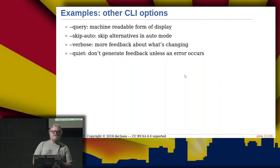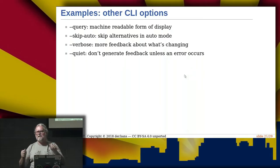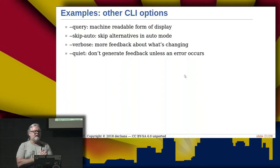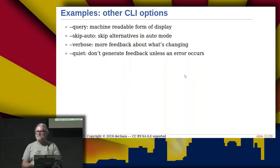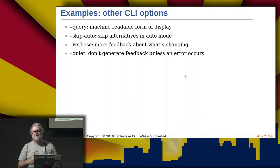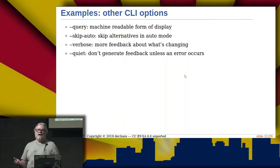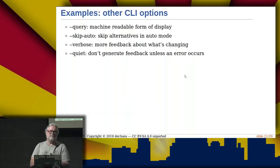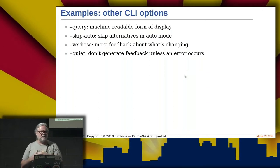Some other command-line options: --query gives you a machine-readable form of display — the same information as --display but with labels on each line, making it easier to parse. --skip-auto skips the alternatives that are in automatic mode, so it's a way of finding things you've put in manual mode. --verbose gives you more feedback about what's changing. And --quiet means don't tell me anything unless there's an error — good for automation with --set so you're not piping to /dev/null unnecessarily.